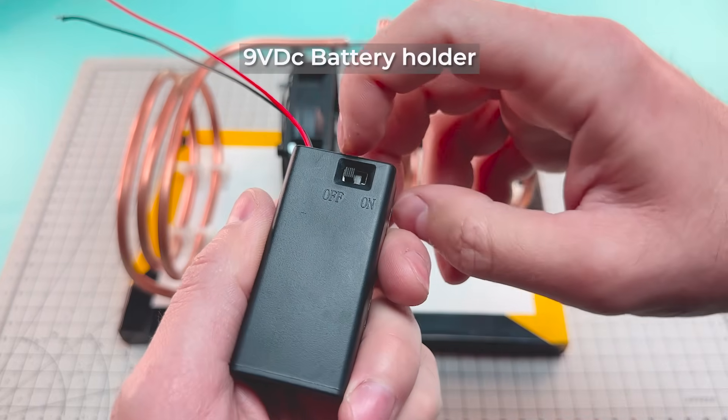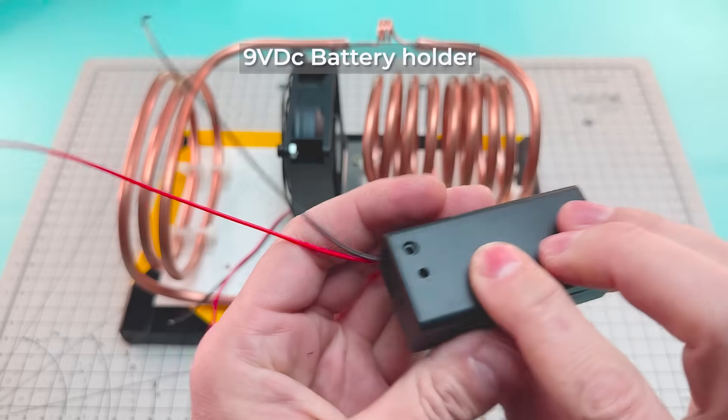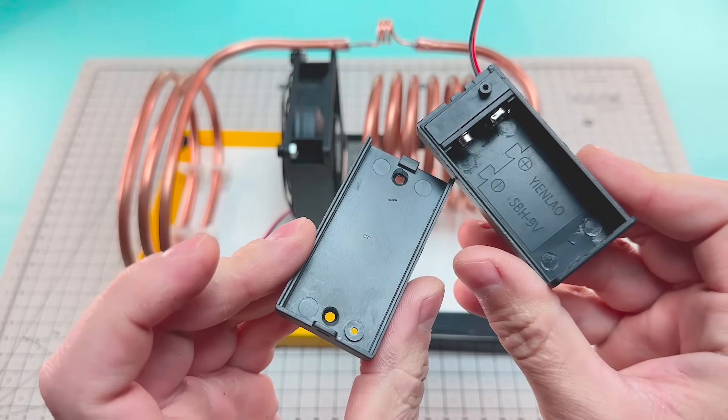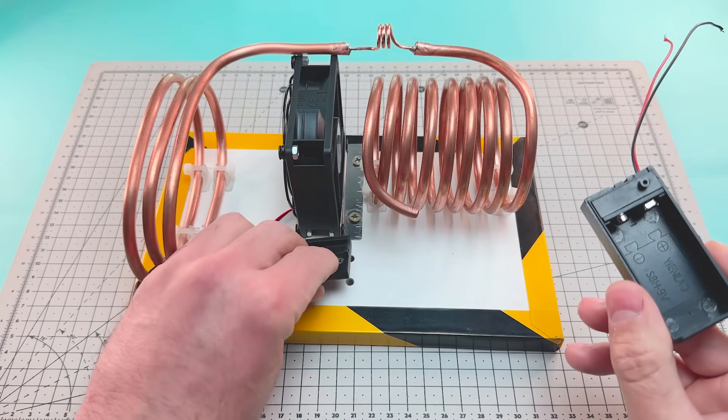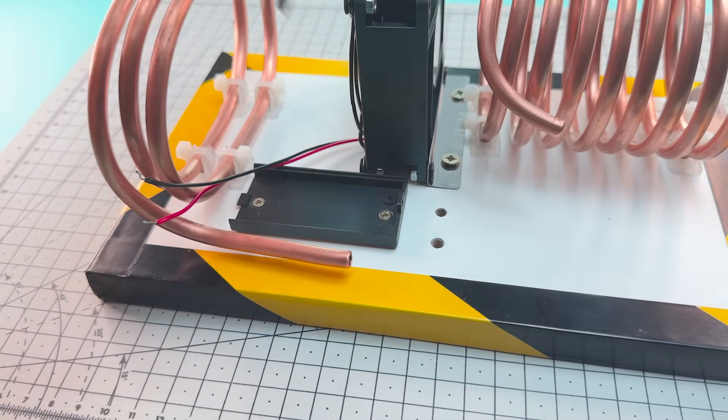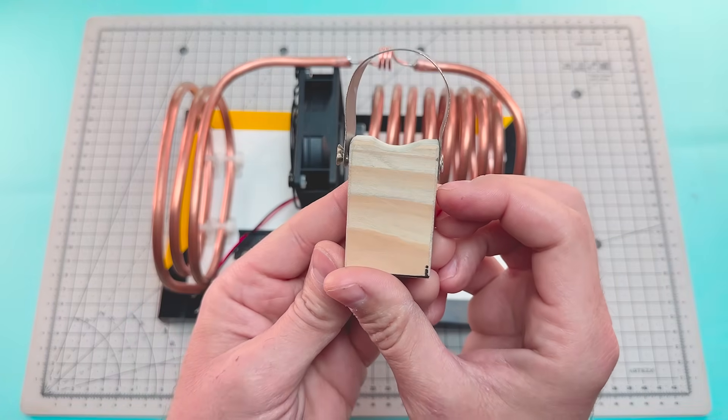Now we're going to install a small battery holder. And next to this holder, another one that will support an air pump.